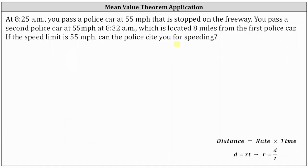Just because you weren't speeding at 8:25 a.m. and you weren't speeding at 8:32 a.m., that doesn't mean you weren't speeding somewhere between 8:25 a.m. and 8:32 a.m. We'll determine your average rate of speed over this time interval and see if it's more or less than 55 miles per hour.